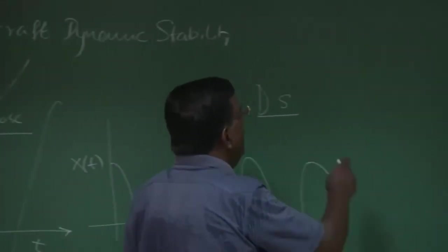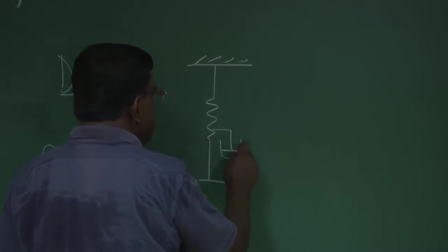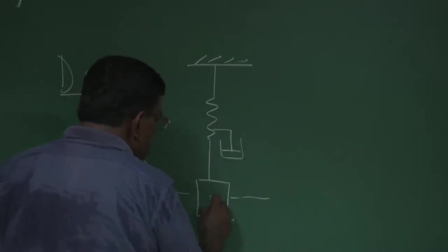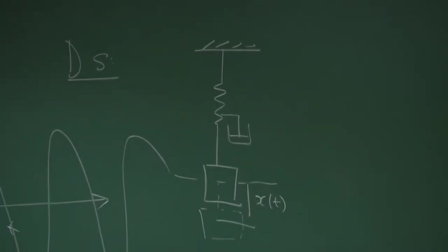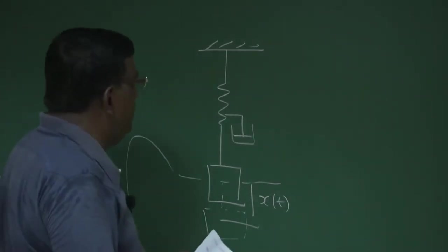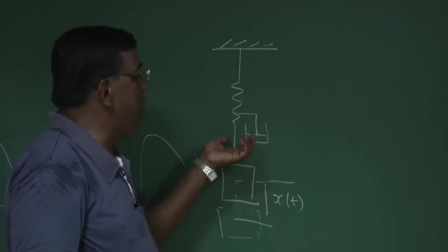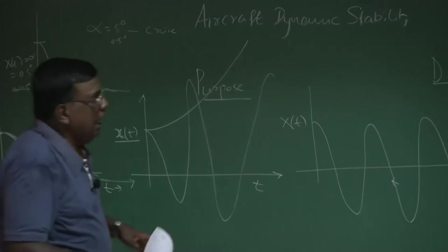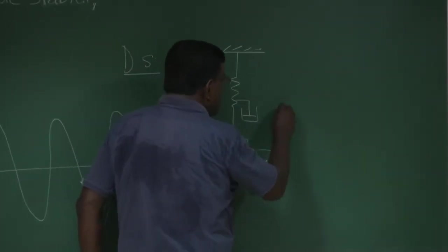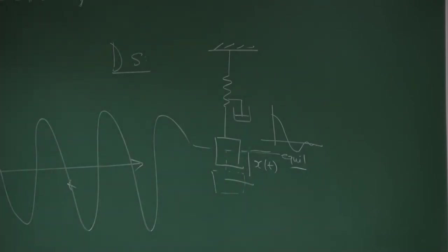For a mass-spring-damper system, the distance x(t) is the perturbed quantity — a small perturbation. The perturbation should not cause any gross change in system behavior; for instance, we should not stretch the spring so much that the spring constant, length, or material cross-section changes. That is the meaning of small disturbance. As the mass is released, it comes back to equilibrium, showing the perturbed quantity has vanished and the system is dynamically stable.